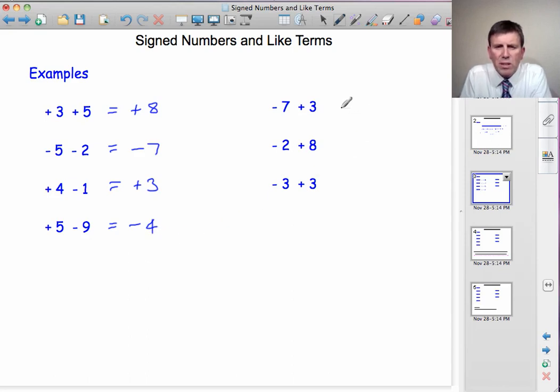Minus 7 plus 3. This time we've got more negatives, so the answer will be negative. Minus 7 plus 3, the difference between them is 4. It's like 3 pluses cancel out 3 of the negatives. And then, there are still 4 negatives left.